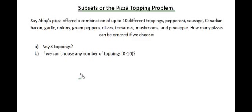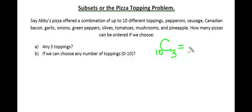Our final topic on combinations is subsets, or the pizza topping problem. Abby's Pizza offers up to ten different toppings: pepperoni, sausage, Canadian bacon, garlic, onions, green peppers, olives, tomatoes, mushrooms, and pineapple. How many pizzas can be ordered if we choose any three toppings? This would be a combination of 10 things chosen 3 at a time, giving us 120 different pizzas.